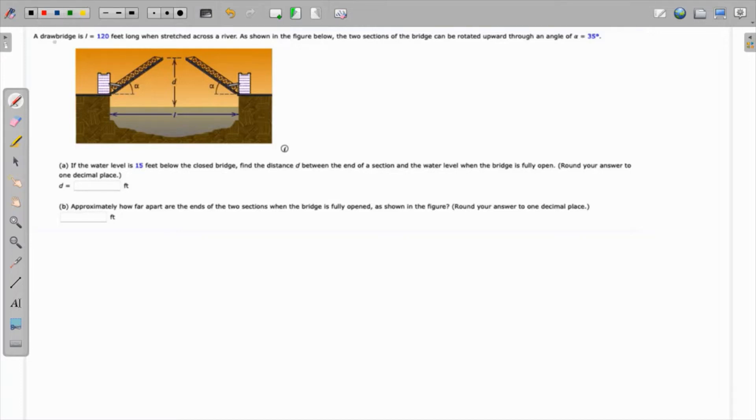Interesting question. We are given that there's a drawbridge with a length of 120 feet stretched across a river. The two sections can be rotated upward to an angle of 35 degrees, which is shown over here. The water level is 15 feet below the closed bridge, so the closed bridge is on this dotted line and the water is 15 feet below.